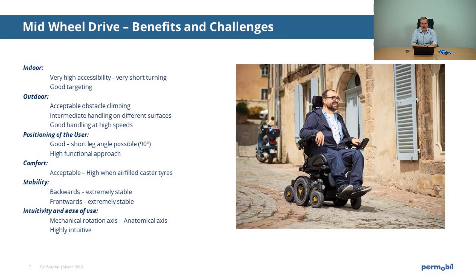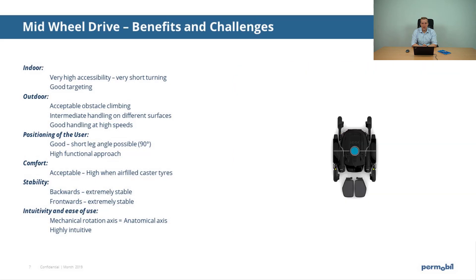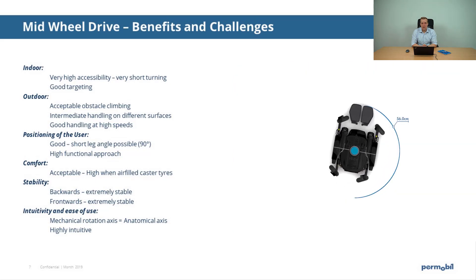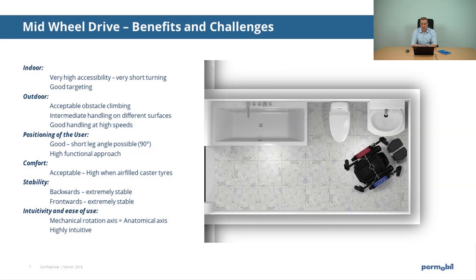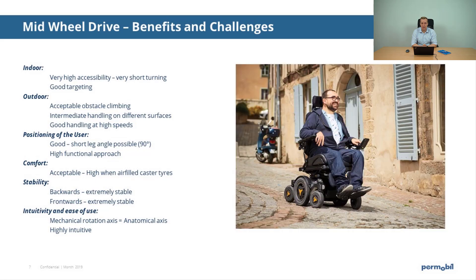Users using a mid-wheel driven platform will also experience very high indoor accessibility. The mid-wheel driven platform has the shortest turning radius and shows very good targeting characteristics. Outdoors, the mid-wheel driven platform offers a stable driving experience at high speeds. On the other hand, driving over different types of surfaces and obstacle climbing can be experienced as more difficult. The positioning of the user on this base is good, also offering the possibility for a 90-degree leg angle and a close frontal approach.